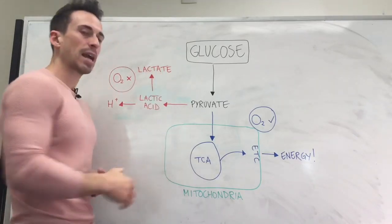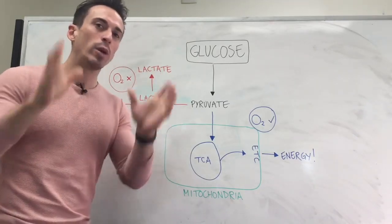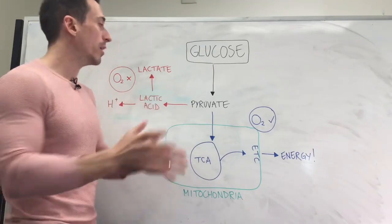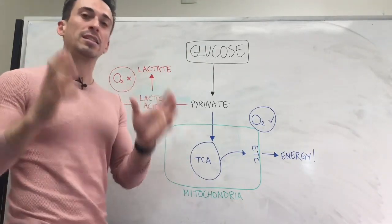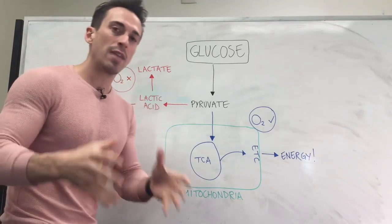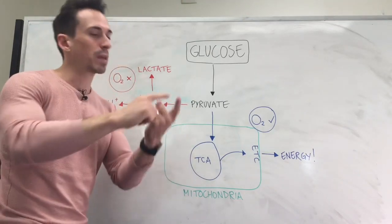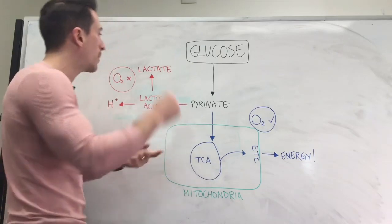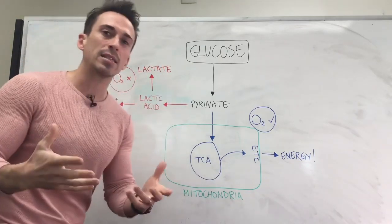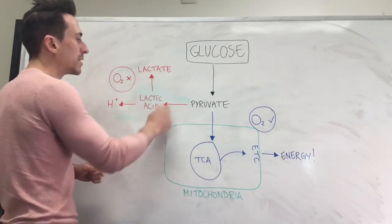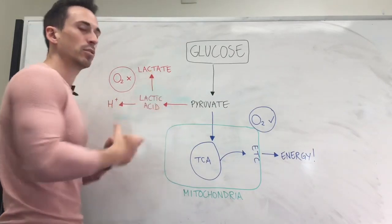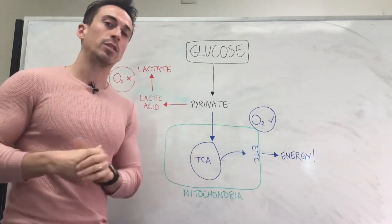Now you're probably thinking, what about lactic acid? Well, we don't actually know whether lactic acid exists. All the old studies demonstrated that under anaerobic conditions — no oxygen — muscles become fatigued, and at the same time lactate increased and it became acidic. They made the assumption that there must have been an intermediate product termed lactic acid that produced these two things. But there's no evidence to actually suggest this.